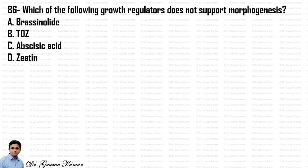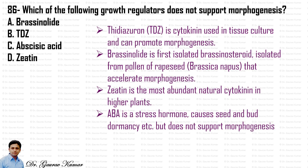Which of the following growth regulators does not support morphogenesis — Brassinolide, TdZ, Abscisic Acid or Zeatin? Thidiazuron (TdZ) is a cytokinin used in tissue culture that can promote morphogenesis. Brassinolide is the first isolated brassinosteroid, isolated from pollen of rape seed, that accelerates morphogenesis. Zeatin is the most abundant natural cytokinin in higher plants, an adenine derivative. ABA (Abscisic Acid) is a stress hormone that causes seed and bud dormancy but does not support morphogenesis. So the answer is C — Abscisic Acid.